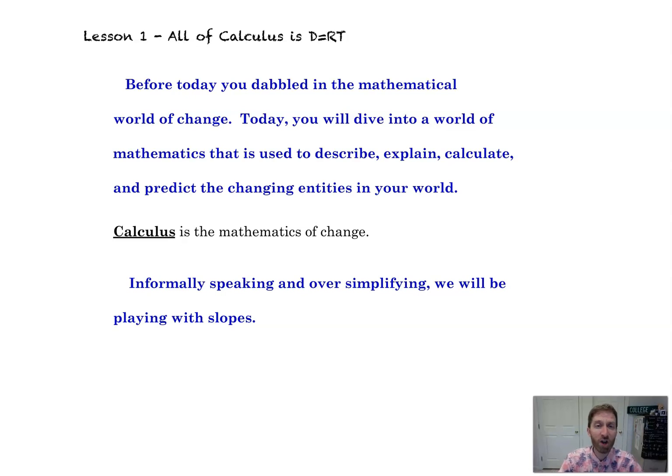So basically, the title says it all. It says all of calculus is D equals RT, or as I affectionately call it, dirt. Basically, distance equals rate times time. So how? Let's dive.